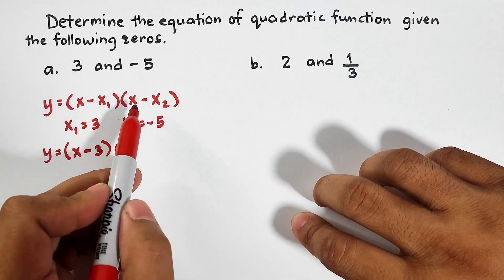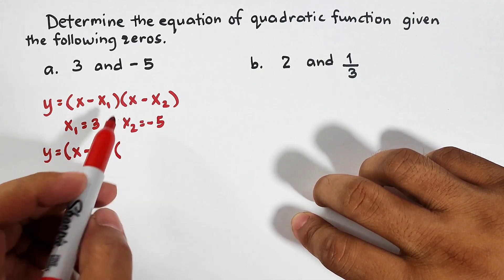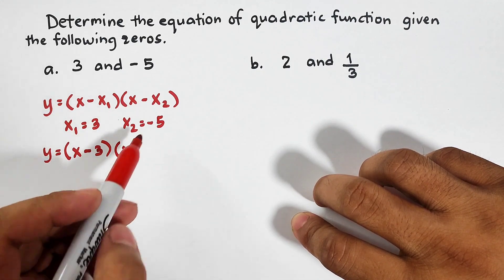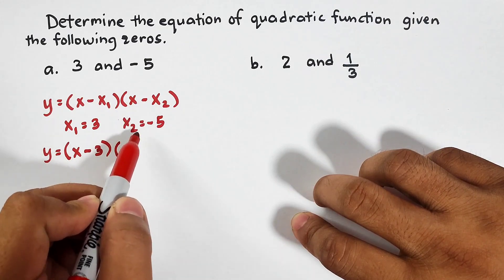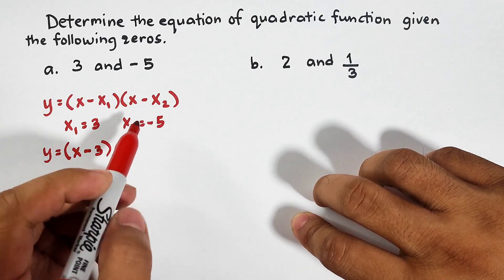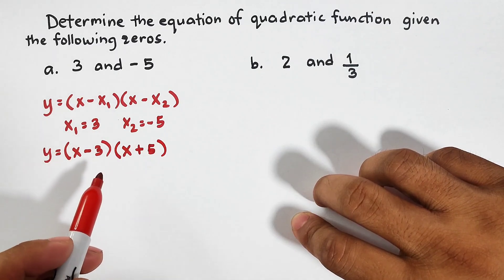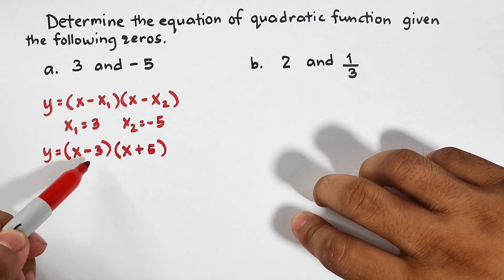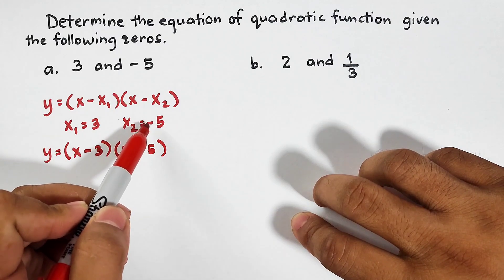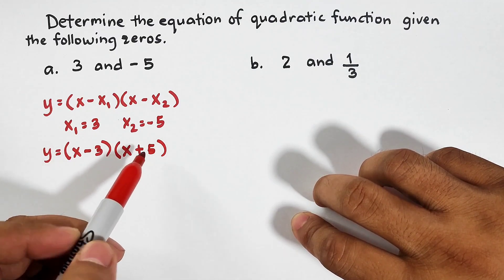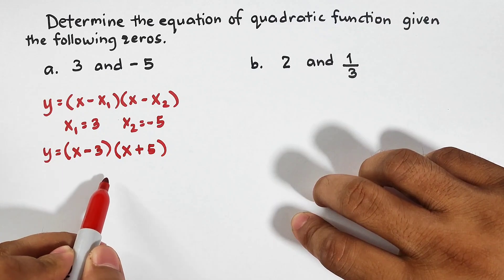Next, we have here x minus x sub 2. Copy the variable x. Since this is minus, when you substitute negative 5, it will become plus 5. And when you notice, here from positive, it became minus 3 or negative 3. This one from negative 5, it became positive 5. And let's do the method.